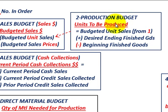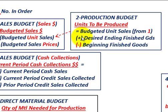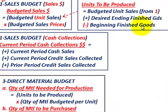For the production budget, number two: units to be produced equals budgeted unit sales from the sales budget, plus the desired ending finished goods, minus beginning finished goods.